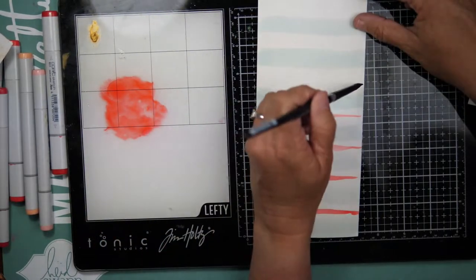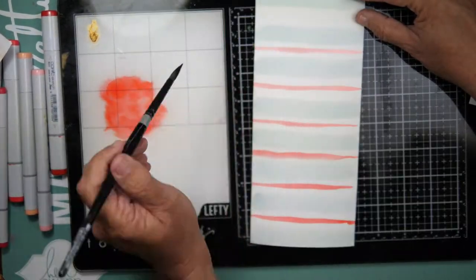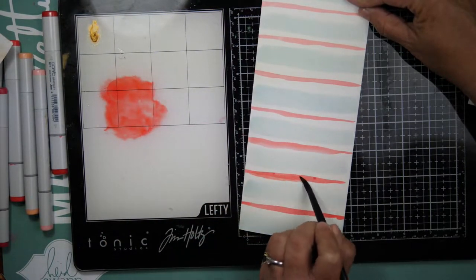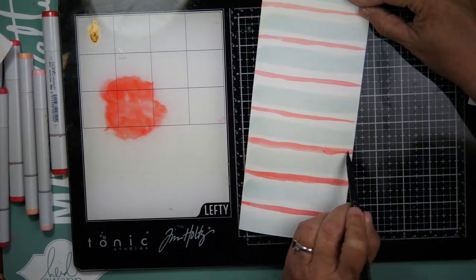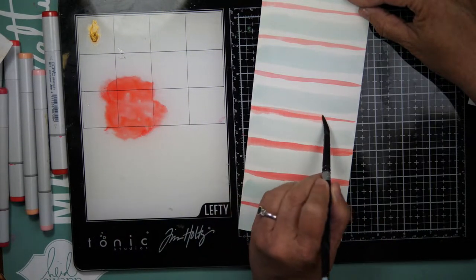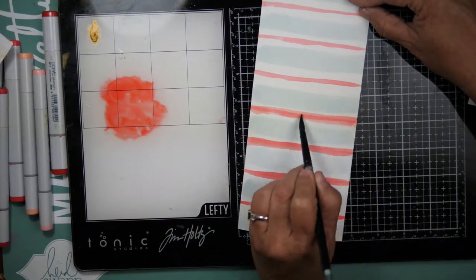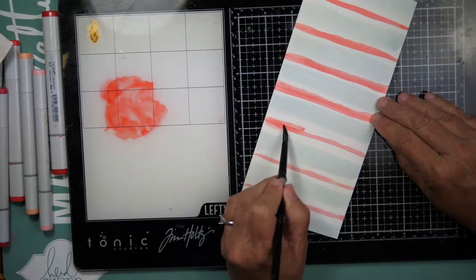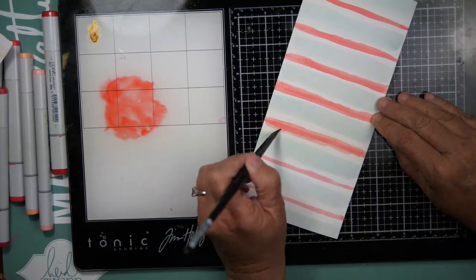So I will just deepen those lines. I want them just a little bit darker and a little bit wider, and so I'm just freehand drawing these organically.